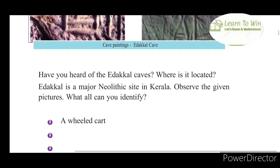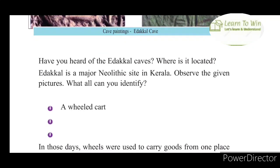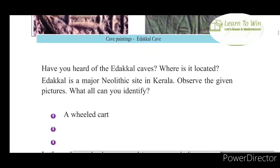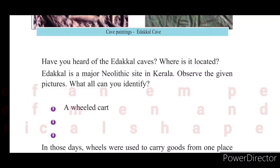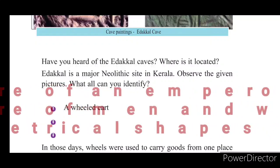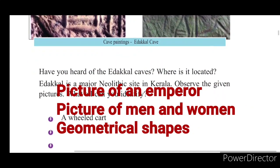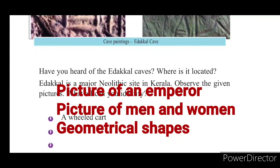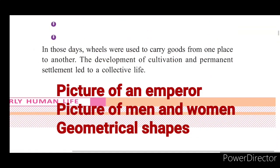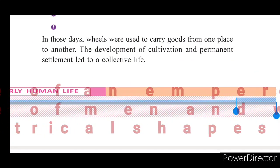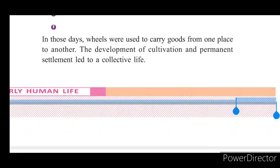Now we will ask you a question: identify a major Neolithic site in Kerala from the pictures. What can you identify? First, the wheel cart. Second, the picture of an emperor. Third, geometrical figures. In those days, wheels were used to carry goods from one place to another. The development of cultivation and permanent settlement led to a collective life.